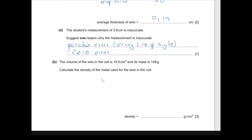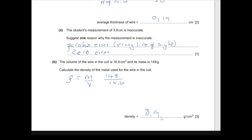For part B: the volume of the wire in the coil is 16.6 cm³ and its mass is 148 grams. Calculate the density of the metal. Density = mass ÷ volume = 148 ÷ 16.6 = 8.9 grams per cubic centimeter. No unit conversion needed since the answer is required in g/cm³.